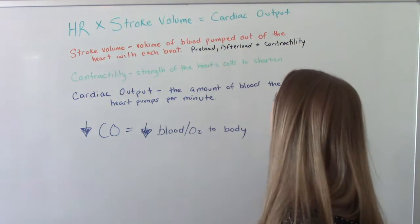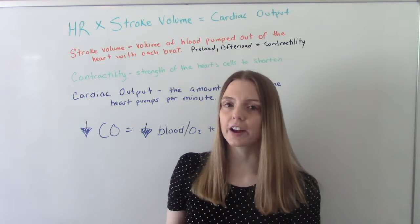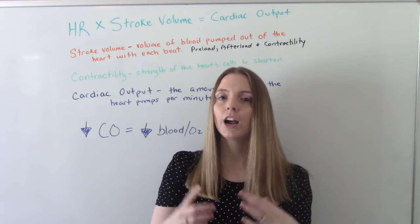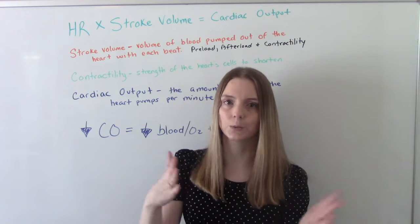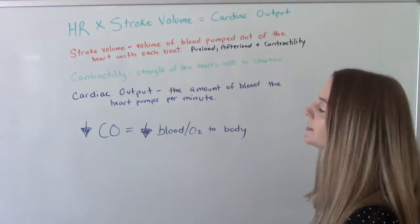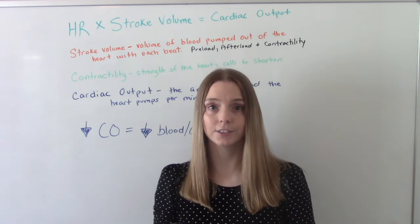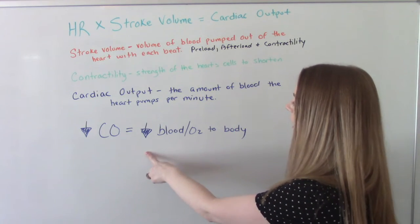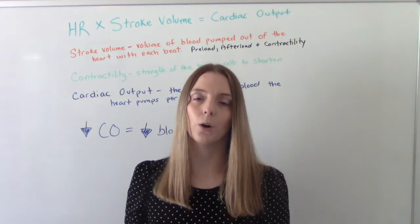Stroke volume is the volume of blood being pumped out of the heart with each beat. Things that affect stroke volume are preload, afterload, and the contractility of the heart. Contractility is the heart's ability to contract — for the muscles to shorten. The cardiac output is the amount of blood the heart pumps per minute. A decreased cardiac output means less blood, and therefore less oxygen, being distributed to the body's tissues. So that's a big deal.